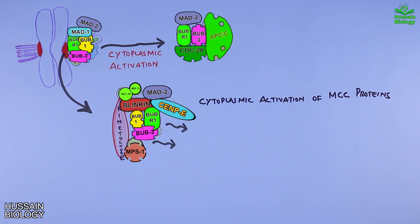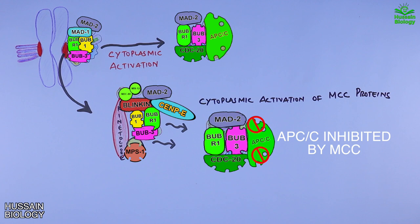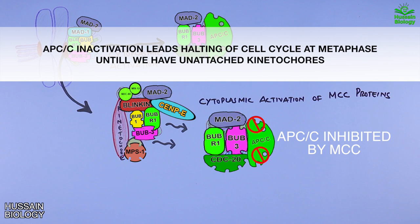In the cytosol, we get activation of BubR1, Bub3, Mad2, and the Cdc20 protein — that's the important protein here. This complex then recruits the APC and makes it inactive. The inactivation of APC will lead to halting of the cell at the metaphase stage, because there are still unattached kinetochores. This is how the spindle assembly checkpoint is driven.